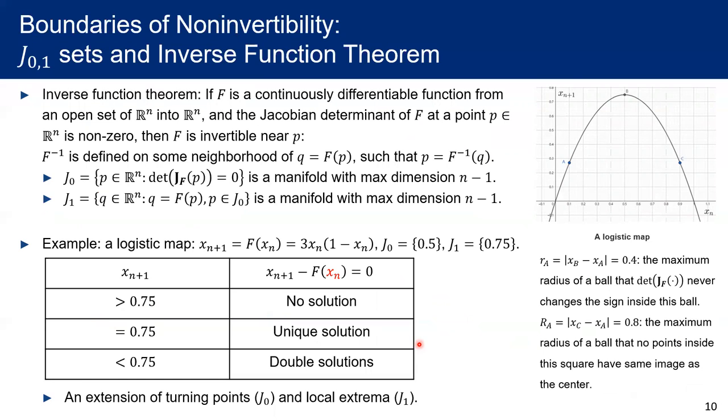So we want to make sure these extra pre-images stay far away from our simulation. For example, how far do they go from the attractor? We noted that inverse function theorem is a good tool for us to understand the backward time dynamics. This theorem says, if a continuously differentiable function F is a mapping from Rn to Rn, and its Jacobian determinant at some point P is non-zero, then F is invertible near this point P.